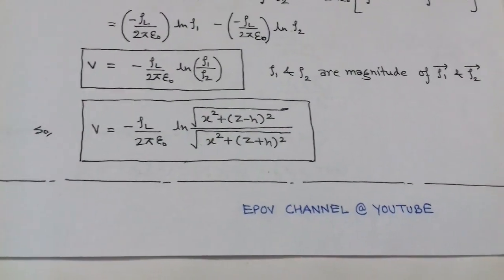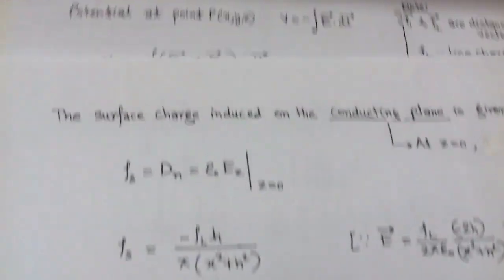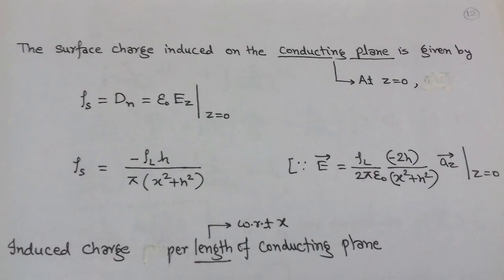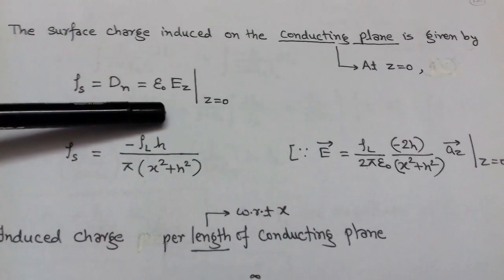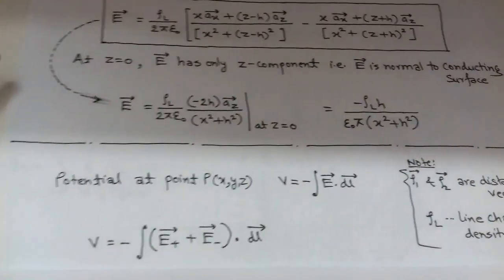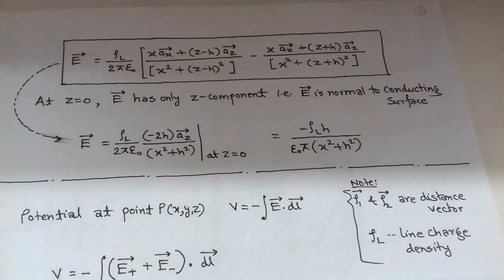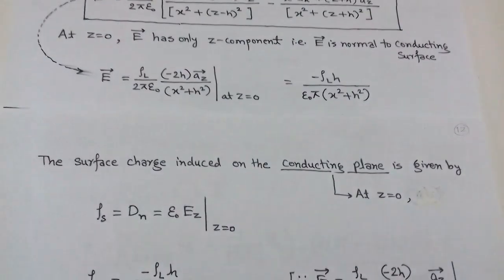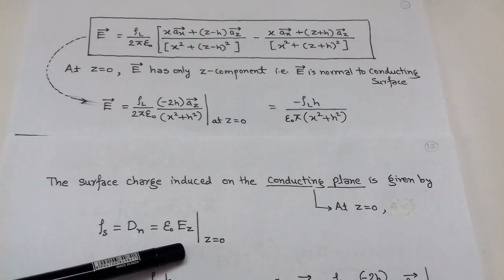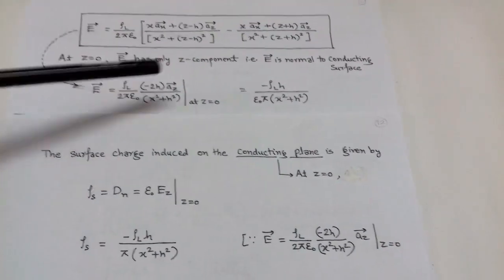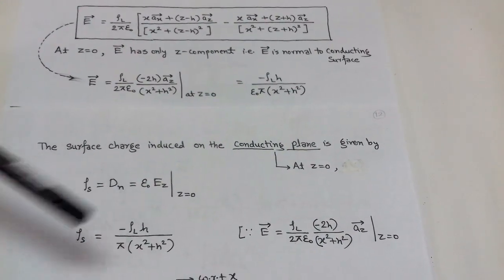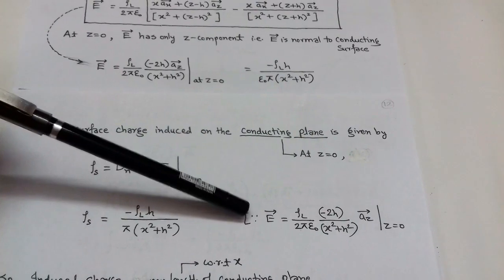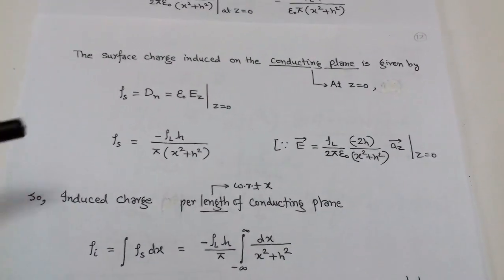With the help of the electric field, we can also determine the surface charge induced on the conducting plane situated at z equals 0. At z equals 0, the electric field has only the normal component, that is the z-component. The surface charge density rho_s equals D_n, the normal component of electric flux density, and D equals epsilon_0*E. After putting the value of E at z equals 0, epsilon_0 cancels, and in this way we determine the surface charge induced on the conducting plane.